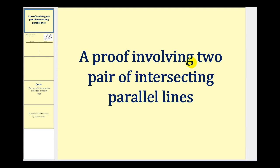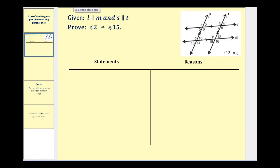Welcome to a proof involving two pairs of intersecting parallel lines. We're given that lines L and M are parallel, and S and T are parallel. You can see they intersect and form 16 different angles. We want to prove that angle two is congruent to angle 15.